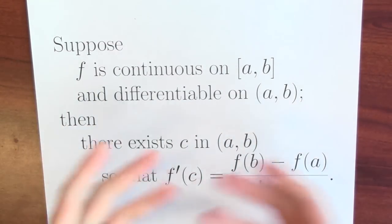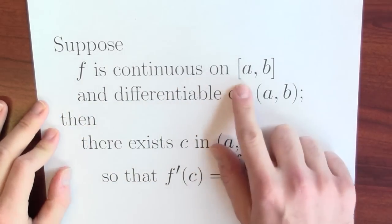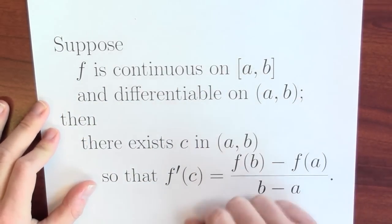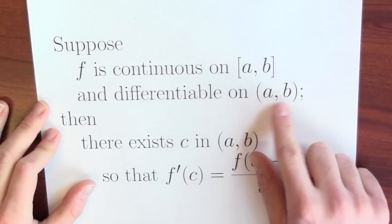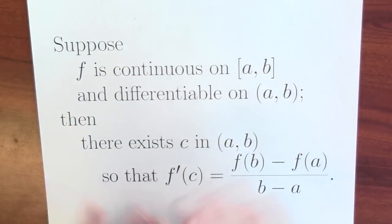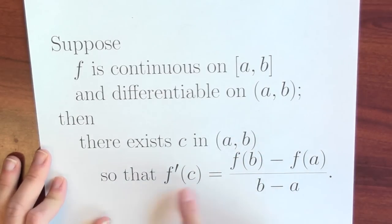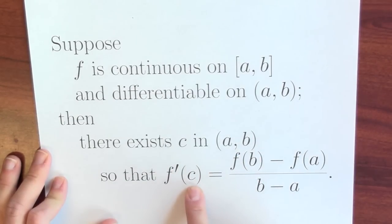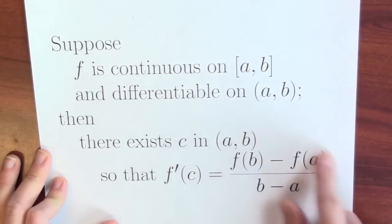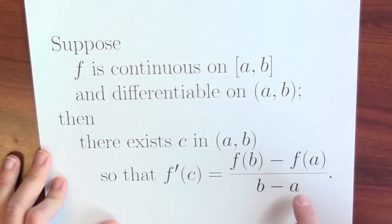Here's a statement of the mean value theorem. Suppose that f is continuous on the closed interval between a and b, and it's differentiable on the open interval (a, b). That's the setup — f is a pretty nice function. Then, there exists some point c in between a and b such that the derivative of the function at the point c is equal to (f(b) - f(a)) / (b - a), which is really calculating the slope between the points (a, f(a)) and (b, f(b)).